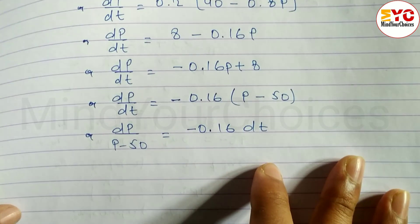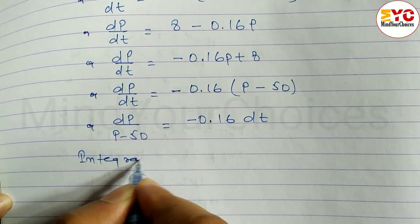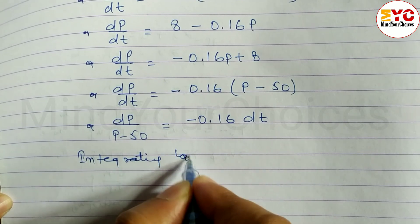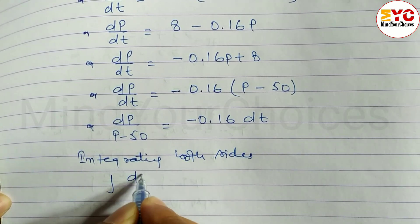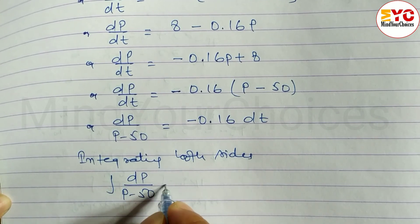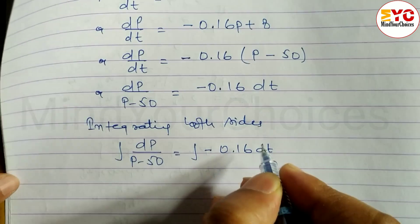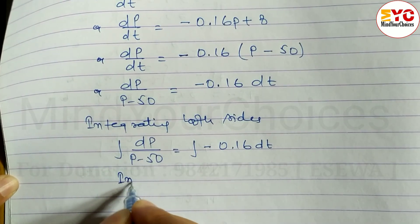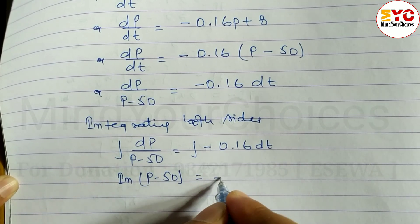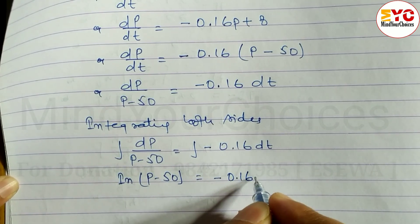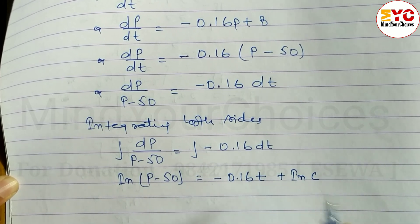Integrating both sides: the integral of dp over (p minus 50) equals the integral of negative 0.16 dt, which gives log(p minus 50) equals negative 0.16t plus log C.